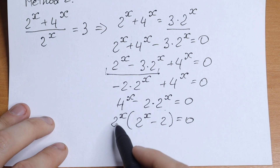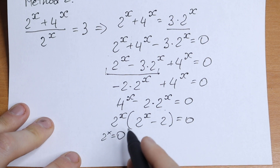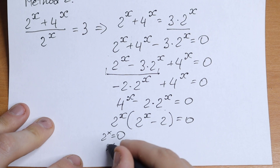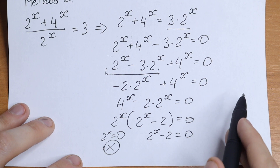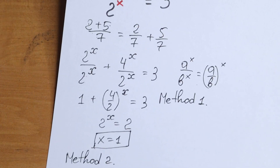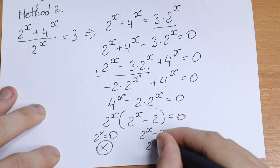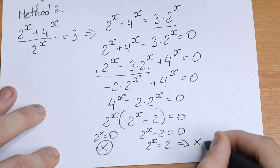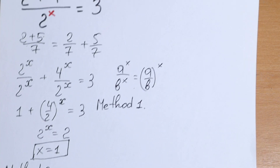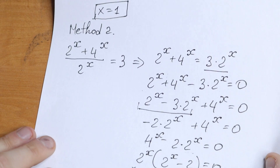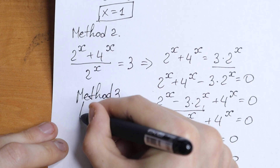We have a product equal to zero, so either 2 to the power x equals 0 — which has no roots since an exponential is never zero — or 2 to the power x minus 2 equals 0, giving 2 to the power x equals 2, so x equals 1. This is the same answer as Method 1. Method 2 is a little harder than Method 1, but if you're interested in logarithms, you can also solve this using Method 3, which is the logarithm method.